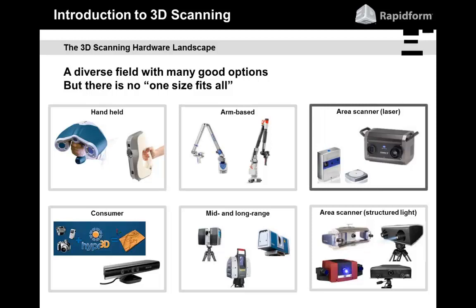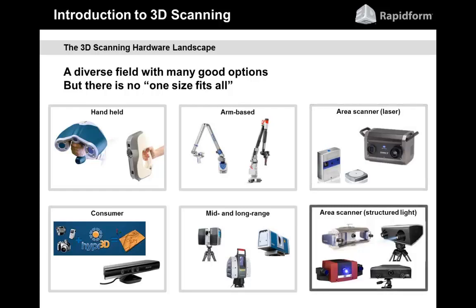There are also area scanners — point-and-shoot type systems where you put the object in front of the scanner, possibly on a rotary table that automatically rotates the part so the scanner can take shots from multiple angles, or you manually reposition the part. Area scanners fall into two broad categories: laser-based systems that pass a laser over the object, and structured light scanners — either white-light or blue-light LED scanners. Blue-light systems have become very popular in the last few years due to advantages LED offers over halogen white-light.